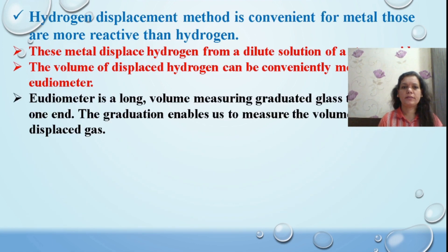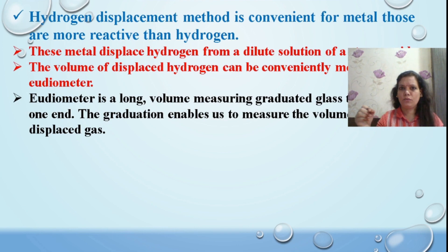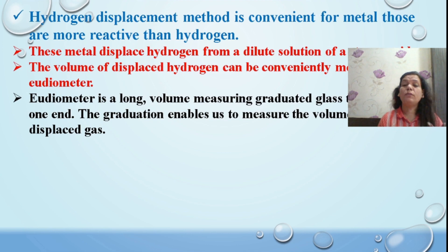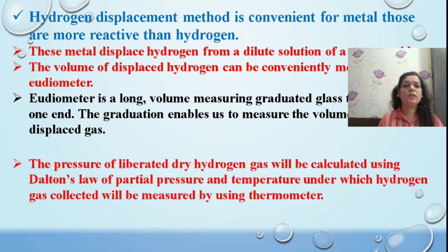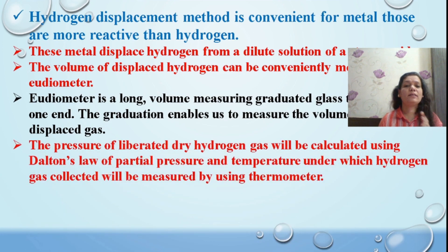We utilize an apparatus called a eudiometer, which is a long cylindrical graduated tube. The graduations are useful to measure the volume of displaced or released gas. One end of the tube is closed and the other end is open. The released gas is collected inside this closed tube and used to find out the value of R.